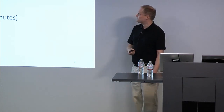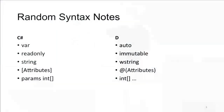First, some random syntax notes. These things come up in our code all the time. Var is like auto in that you can throw anything in there, except C# has no concept of a Voldemort type. In .NET, all strings are UTF-16, so the wstring — a UTF-16 string in D — matters a lot. And my favorite is D's shorter syntax for variable arguments.